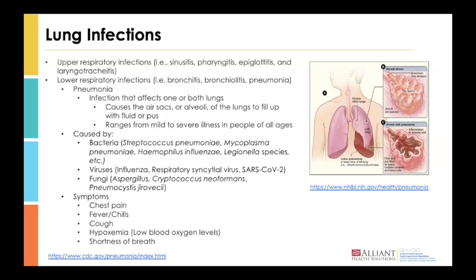Fungal pathogens can also cause infections in residents, though they tend to be more opportunistic, usually presenting in individuals with a weakened immune system or other underlying compromising conditions. Signs and symptoms of pneumonia include chest pain, fever, chills, cough, hypoxemia — low blood oxygen levels — and shortness of breath. These symptoms are usually what gets an individual admitted to the hospital.